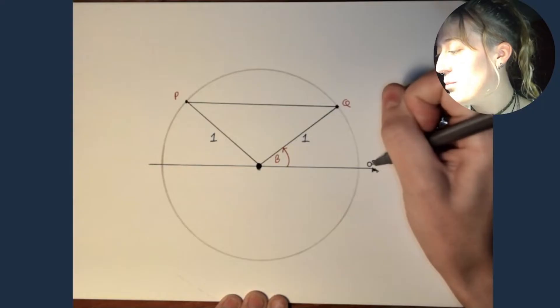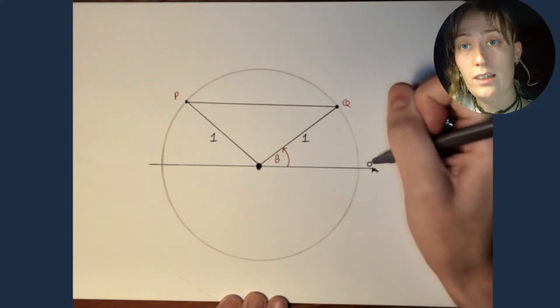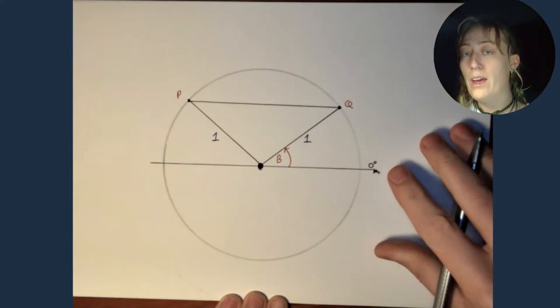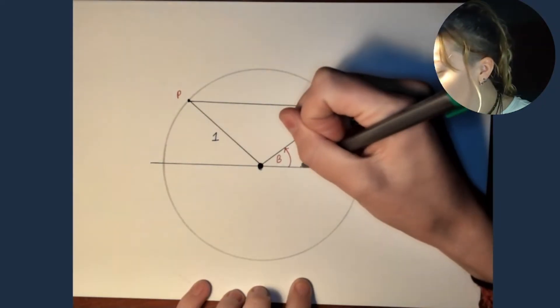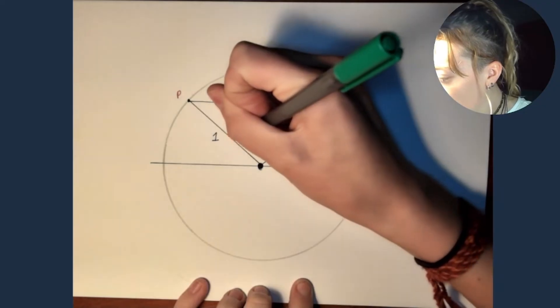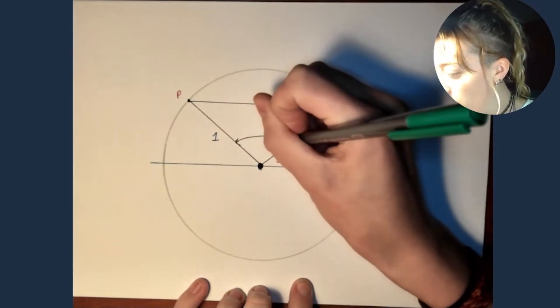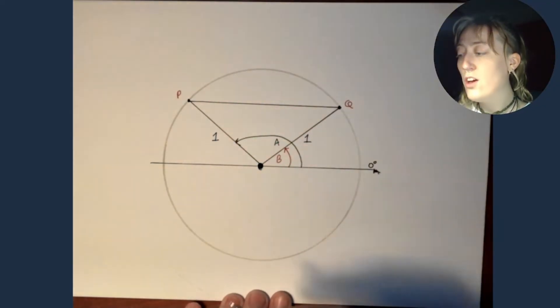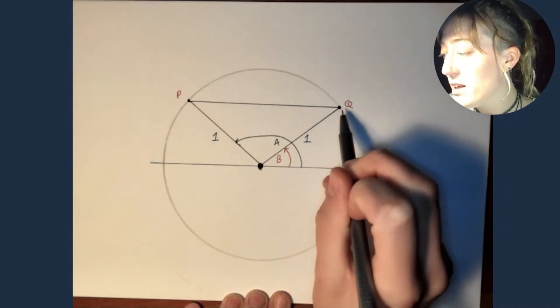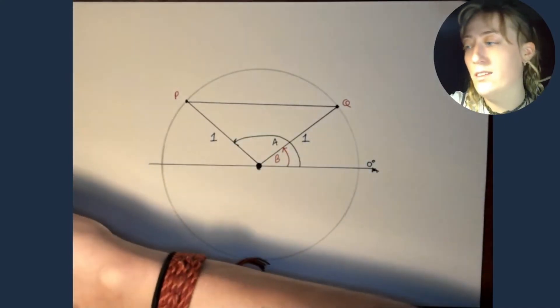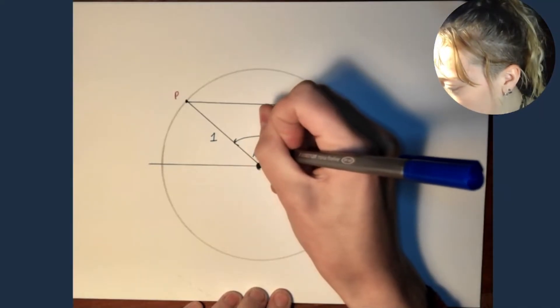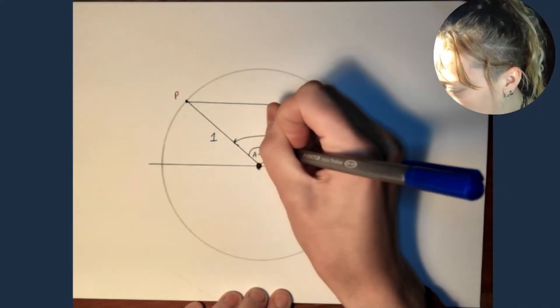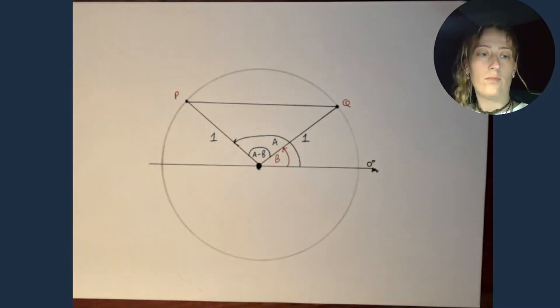Now, I'm going to call the angle from zero degrees here up to this radius, which joins the point Q. I'm going to call this angle B. I'm now going to do the same thing. I'm going to draw a line from the point where the zero degrees is all the way to the radius that joins up to the point P. And I'm going to call that angle A. So therefore, what is the angle between this radius and the other radius? Well, it's the angle A minus B. And we're going to mark it in as such.